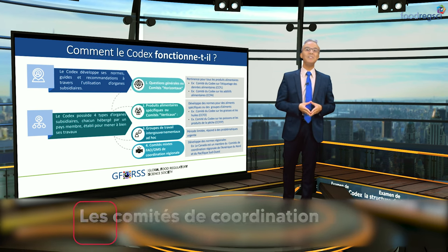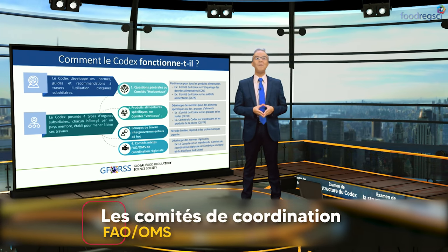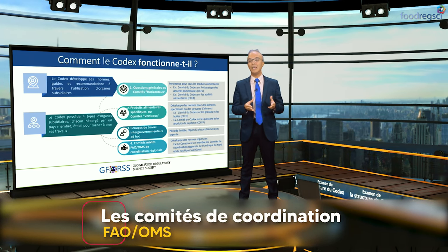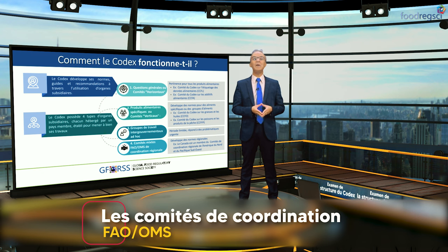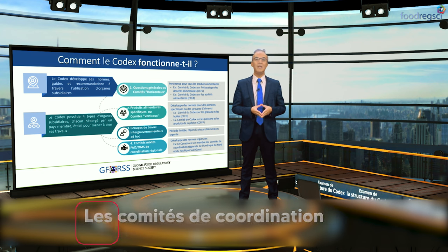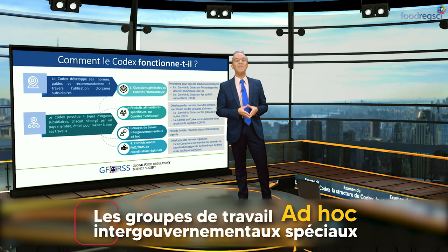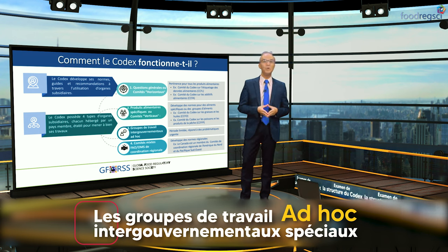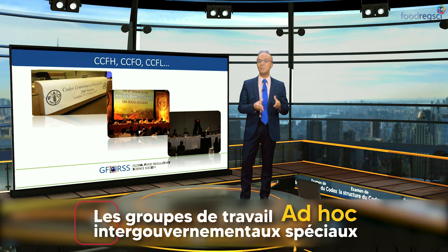Le troisième type, ce sont les comités de coordination FAO-OMS, par l'intermédiaire desquels les régions, où les groupes de pays coordonnent les activités de normalisation alimentaire dans la région, y compris l'élaboration des normes régionales. Et le quatrième et dernier type, ce sont les groupes de travail intergouvernementaux spéciaux, qui sont limités dans le temps et qui préparent des normes et des lignes directrices sur des questions spécifiques.